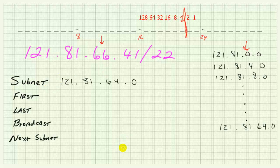Now that we know the subnet ID for the current subnet is 121.81.64.0, what's going to be the subnet ID for the next subnet? It's simply the current subnet plus the increment. The increment is four, so our next subnet is simply 121.81.68.0. The next one after that would be 121.81.72.0, and so on.